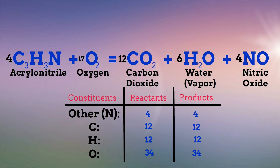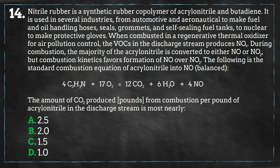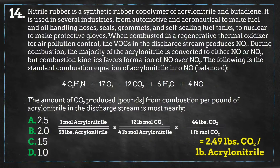Now we can answer our original question: how many pounds of carbon dioxide will be produced from combustion per pound of acrylonitrile in the discharge stream? For every four molecules of acrylonitrile, we generate twelve molecules of carbon dioxide. Using the molecular weight of acrylonitrile and carbon dioxide as 53 and 44 respectively, we get a total of 2.49 pounds of carbon dioxide per pound of acrylonitrile combusted. This amount is closest to answer A.